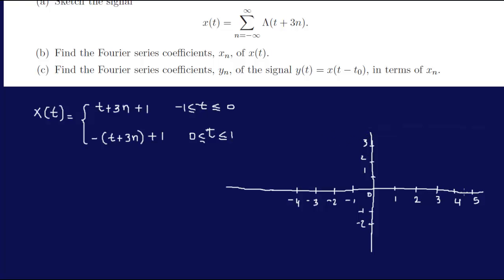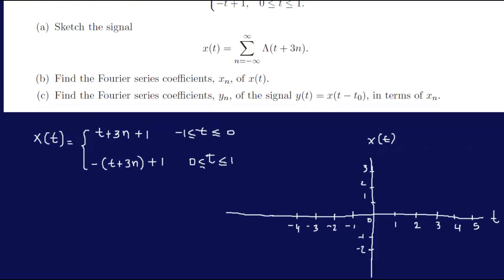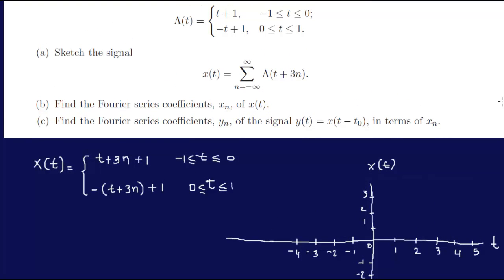So I have my t-axis and x(t)-axis. For λ(t), I have t plus 1, then minus t plus 1. For t between minus 1 and 0, I have t plus 1 — that's just a linear line, like y equals x plus 1. So if t is 0, then x(t) equals 1, and if t is minus 1, then x(t) equals 0. So you have a straight line over that interval.